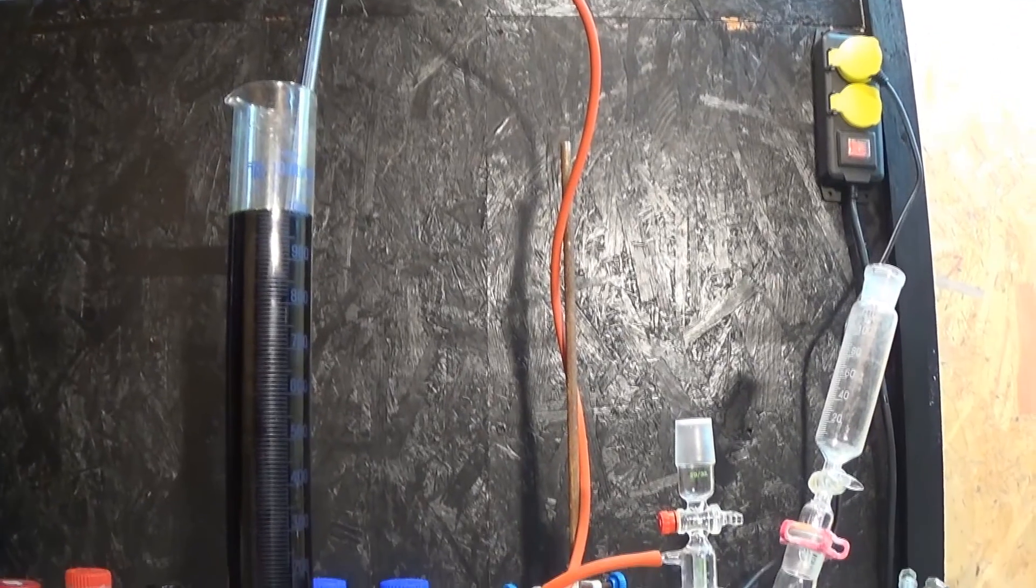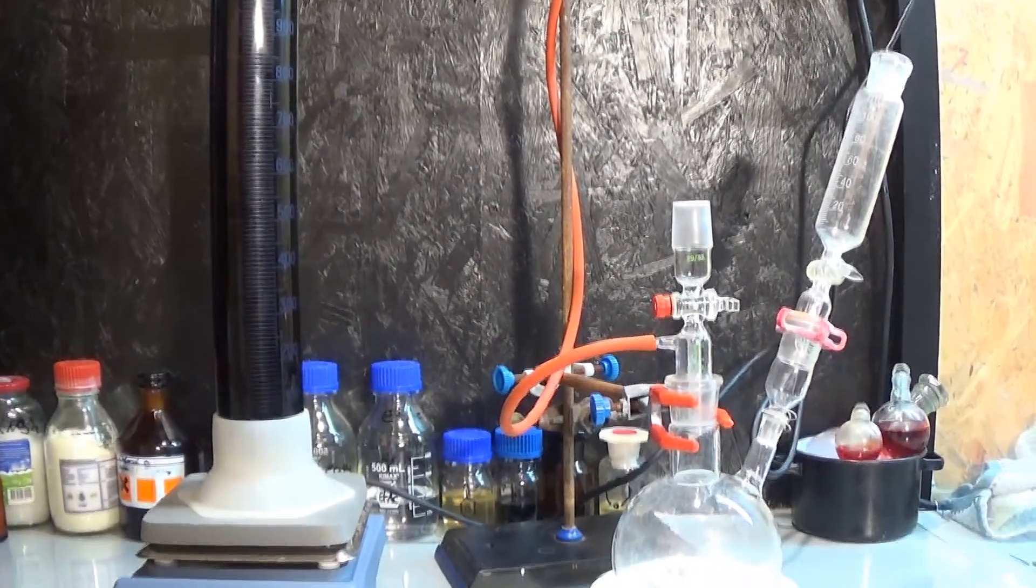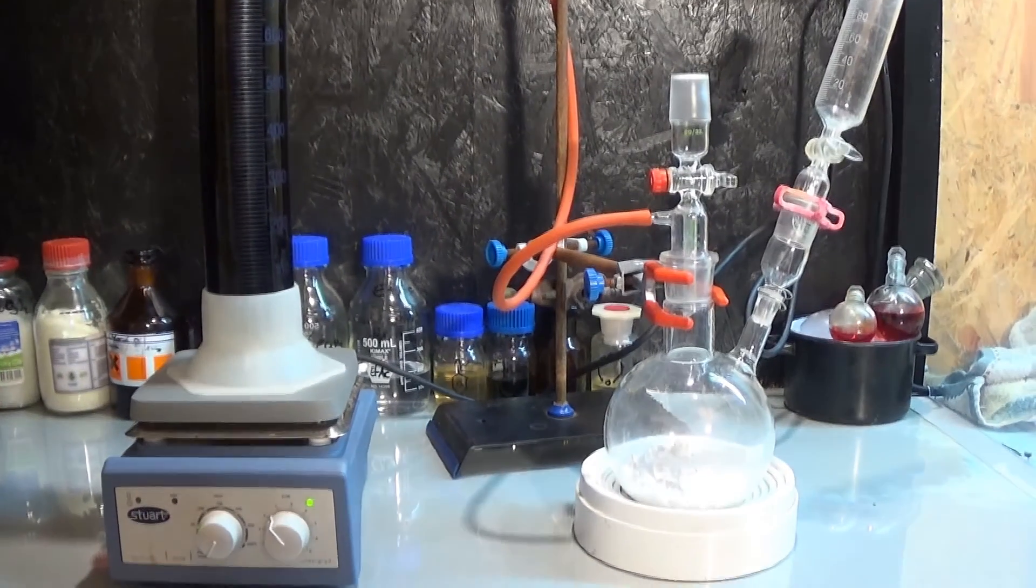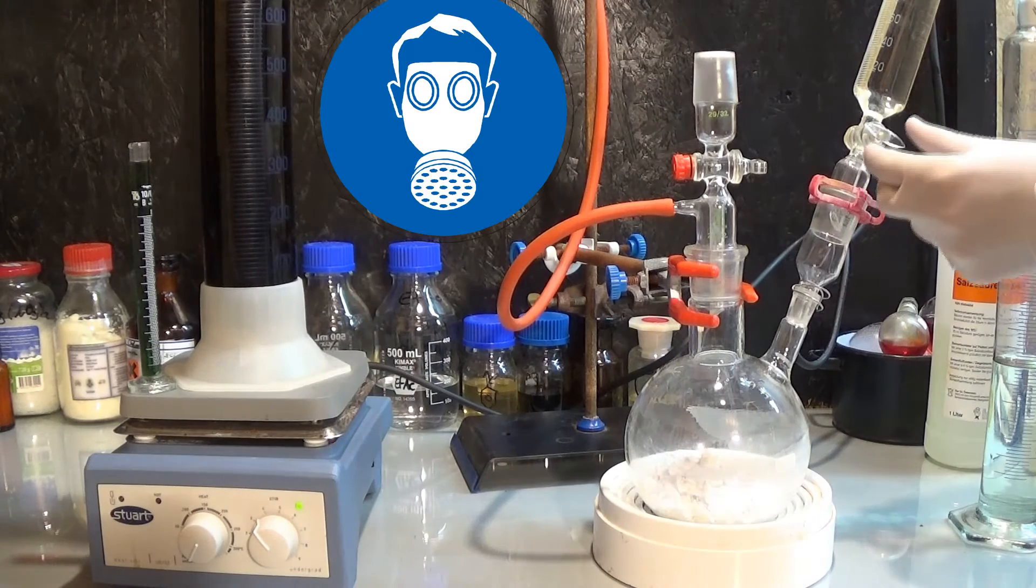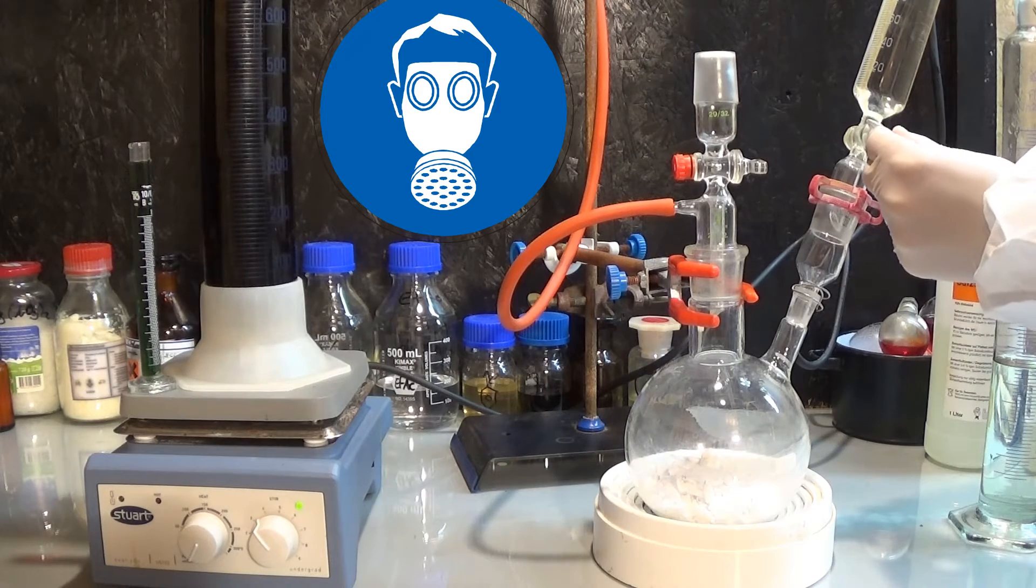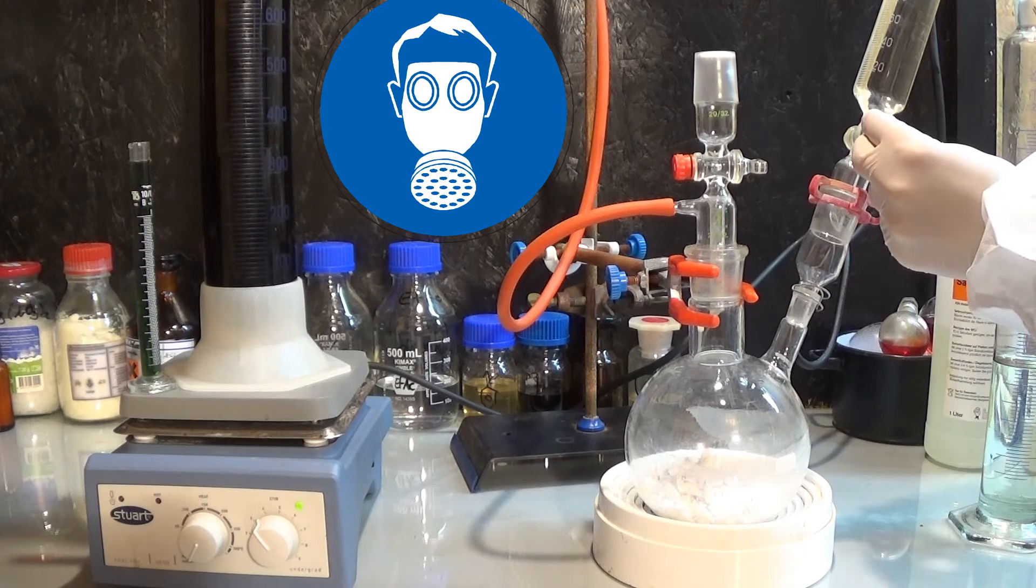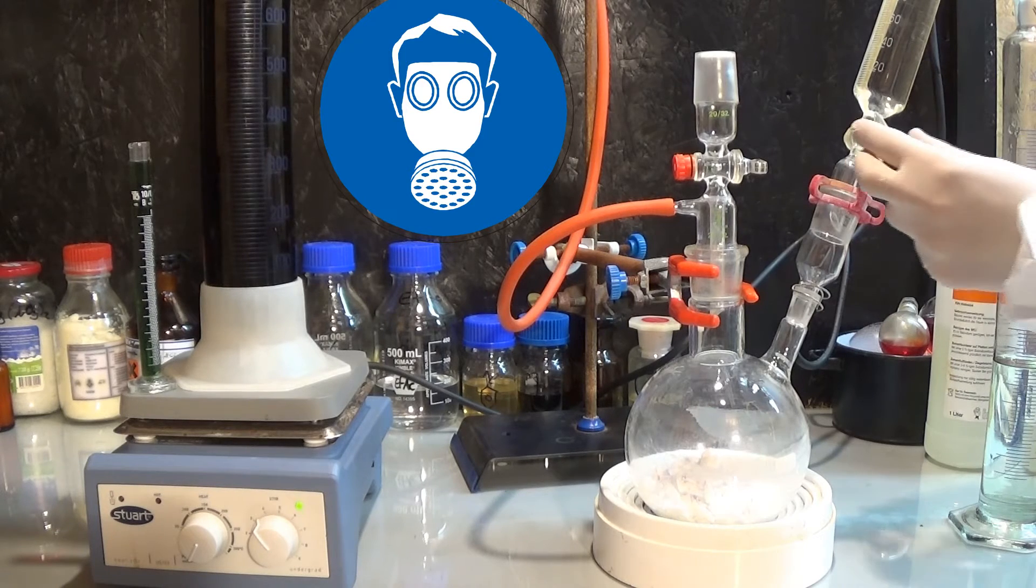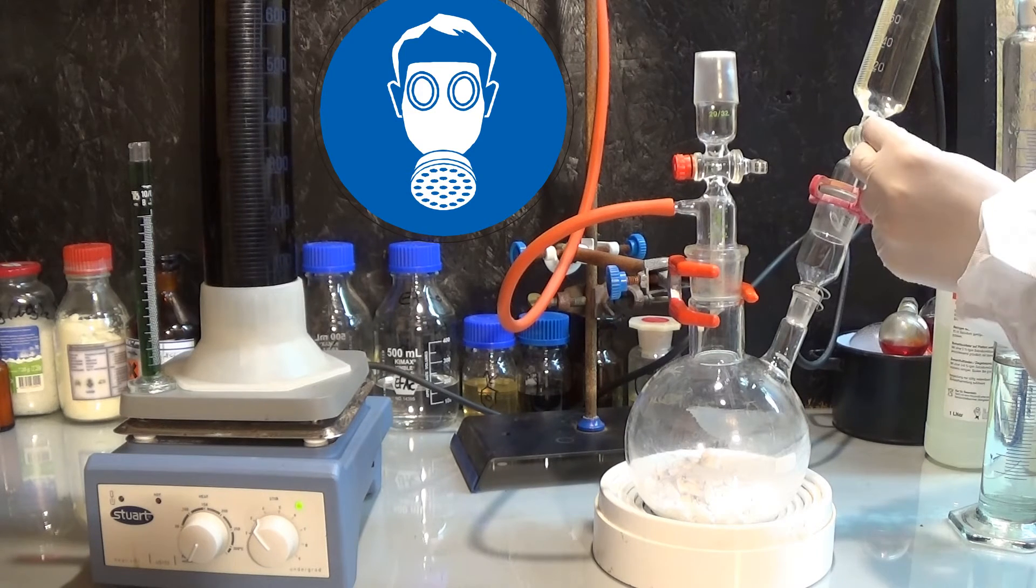So now comes the point where the gas mask is mandatory, and I am not joking—the chlorine can kill you. Now the hydrochloric acid drip rate is adjusted in a manner where only a few bubbles a second are evolved. You really do not want to overshoot because there is no backup containment of extra chlorine gas, so the evolution of it should be slow and steady.